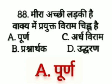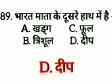The next question: Bharat Maata ke dousrei haath mein hai — option A: cut, option B: trishul, option C: fool, option D: deep. The answer is option D, deep. Bharat Maata ke dousrei haath mein deep hai.